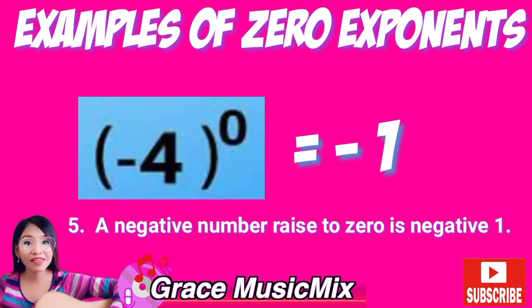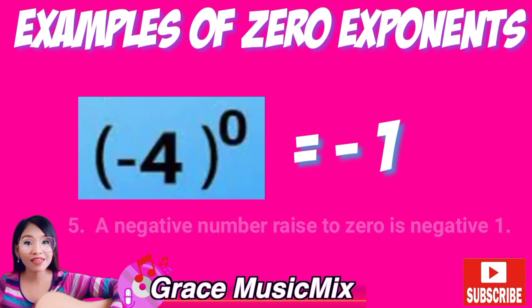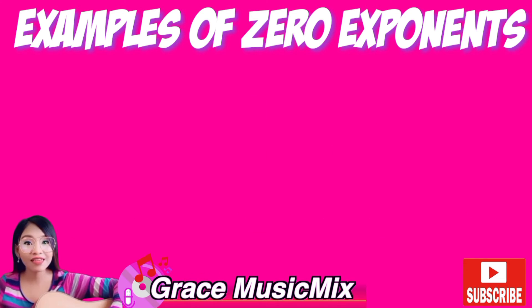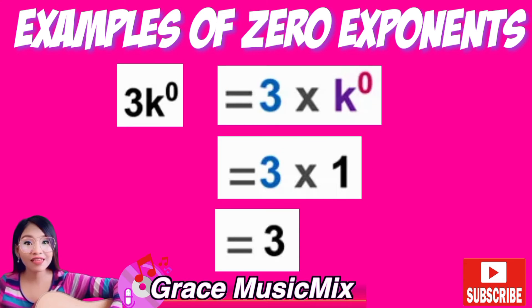Example number 5: a negative number raised to zero is 1. Example number 6: 3k raised to zero equals 3 times k raised to zero, which equals 3 times 1, which equals 3. Thank you.